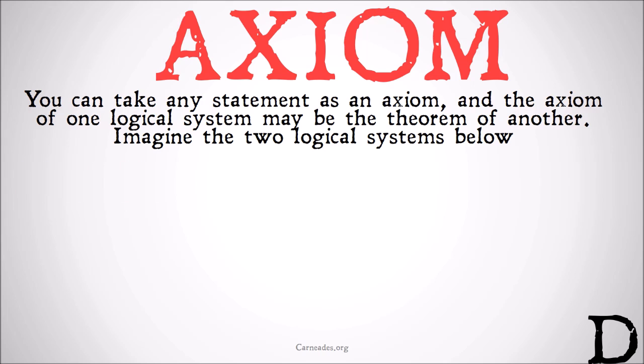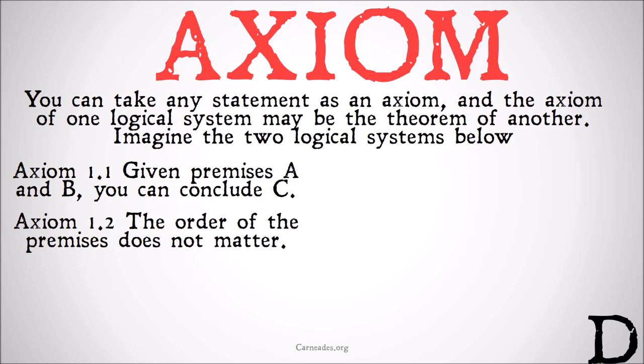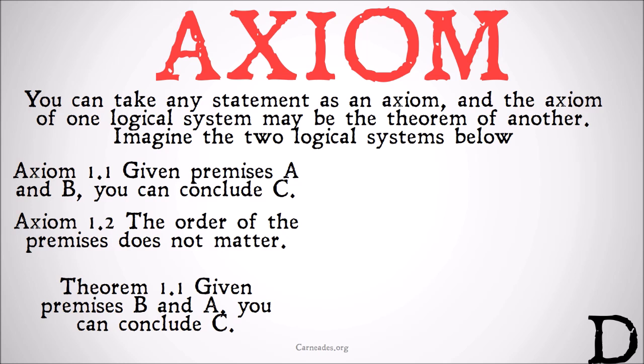Consider two logical systems. Axiom 1a: given premises A and B, you can conclude C. Axiom 1.2: the order of the premises in an argument doesn't matter. Therefore, we can conclude a theorem: given premises B and A, you can conclude C. The first two are axioms — we're assuming them to be true without argument. The third one is a theorem; based on the first two, we prove that premises B and A can give us C.